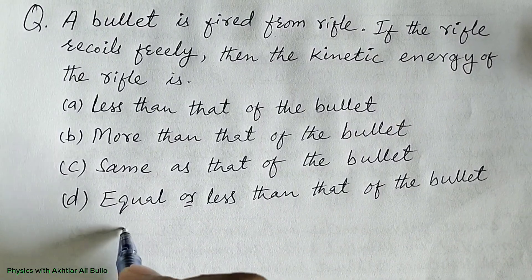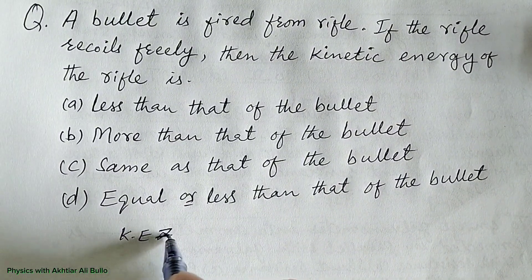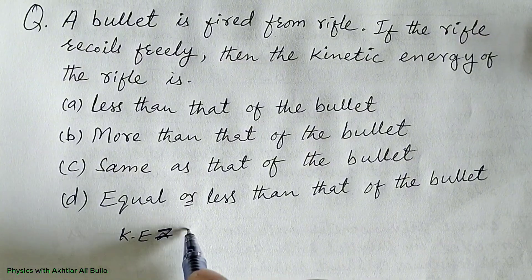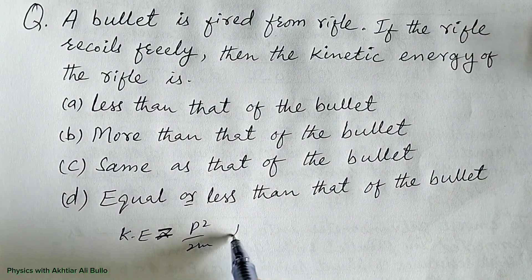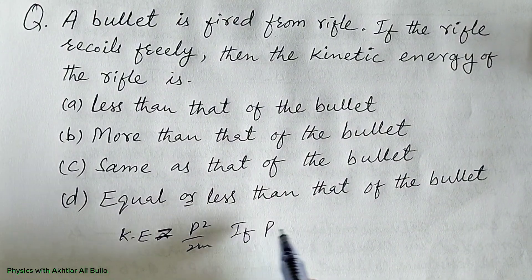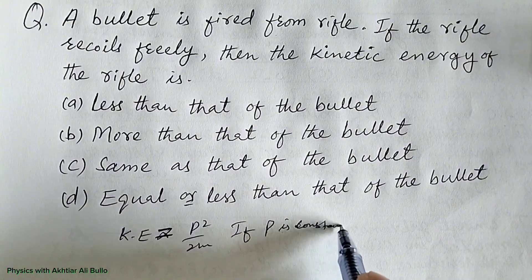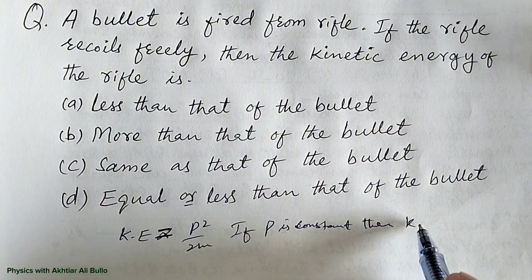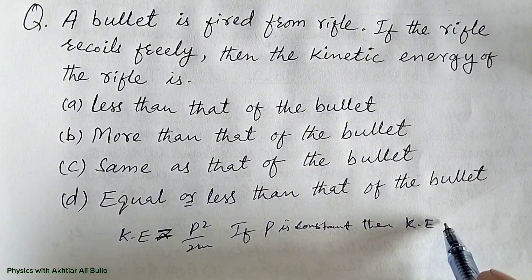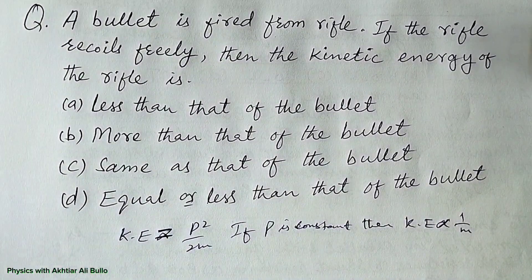Kinetic energy is equal to p squared upon 2m. So if momentum is constant, then kinetic energy is inversely proportional to the mass of the body.